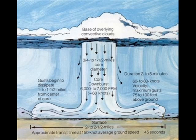A microburst is a very localized column of sinking air producing damaging divergent and straight-line winds at the surface that are similar to but distinguishable from tornadoes.